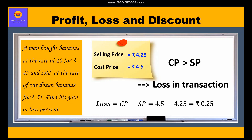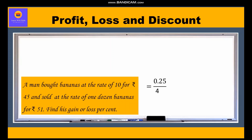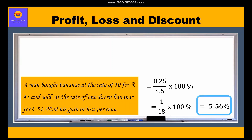Loss percent is always based on cost price. Loss percent = (loss / cost price) × 100 = (0.25 / 4.5) × 100 = (1 / 18) × 100 = 5.56%. This is how we calculated the loss percent for the man who was buying and selling bananas. Thank you.